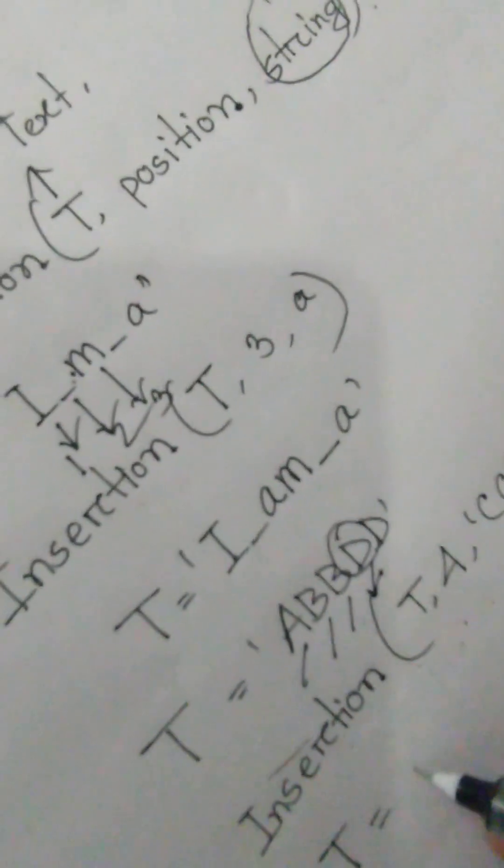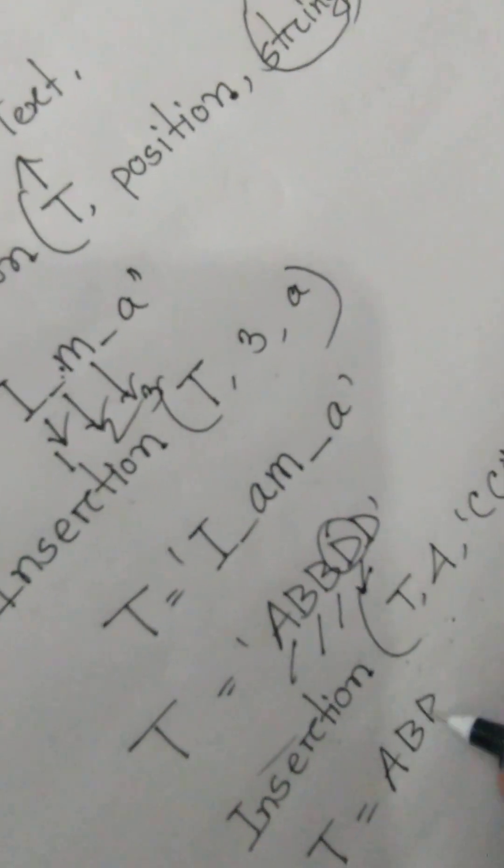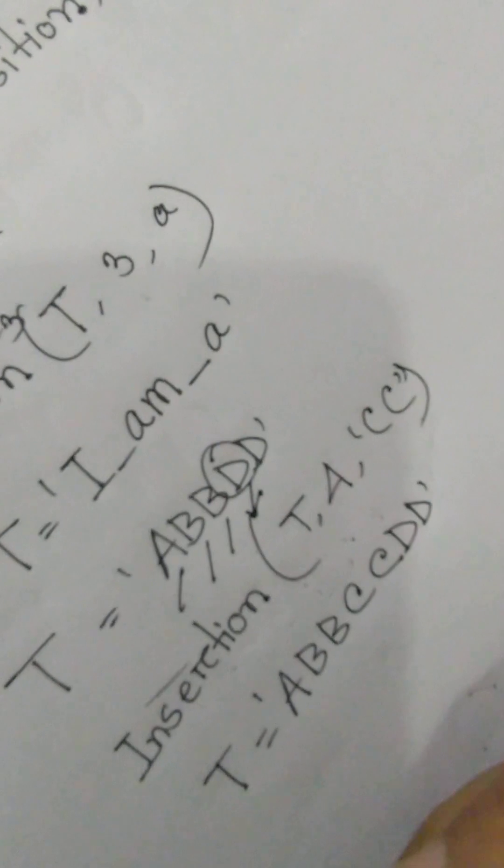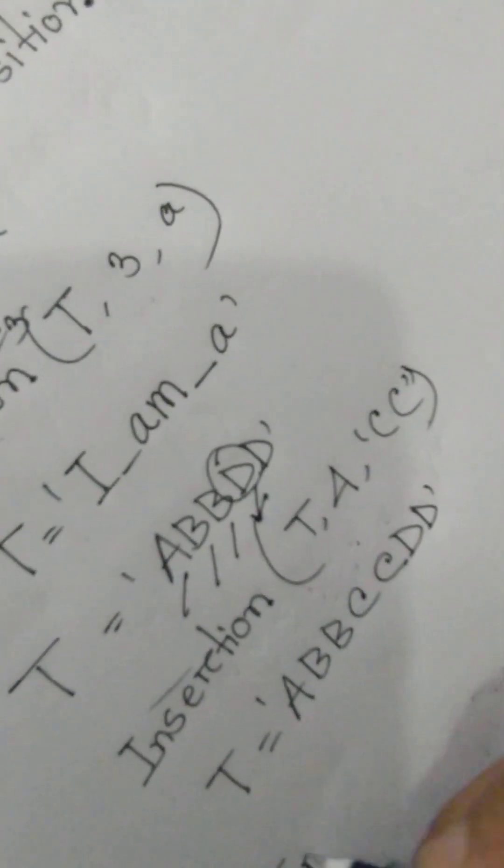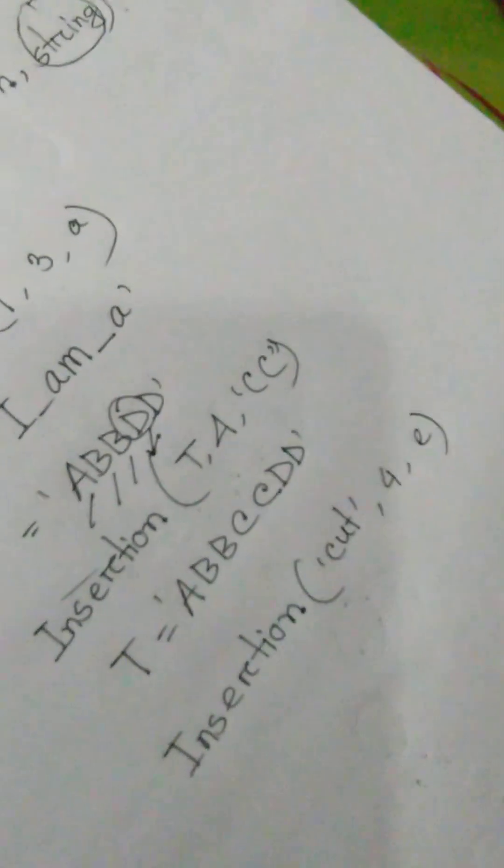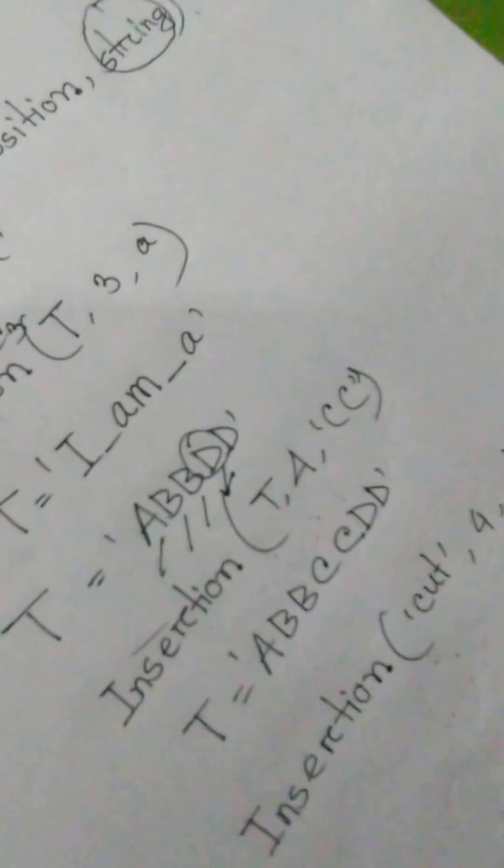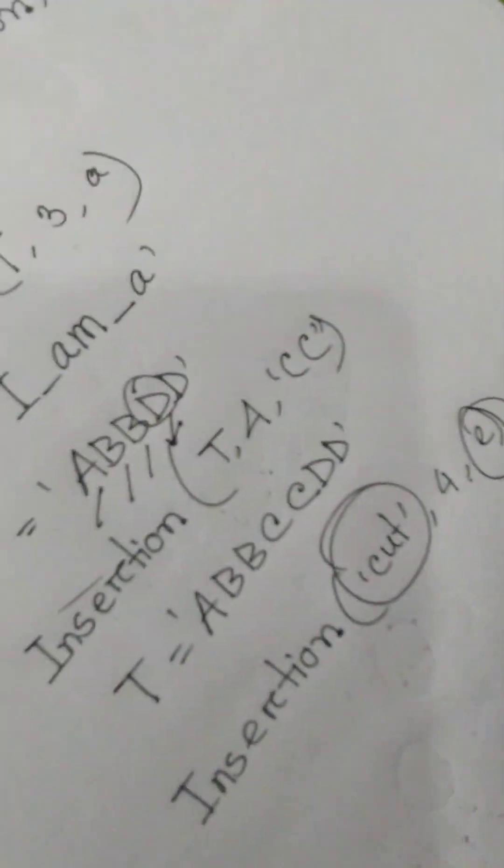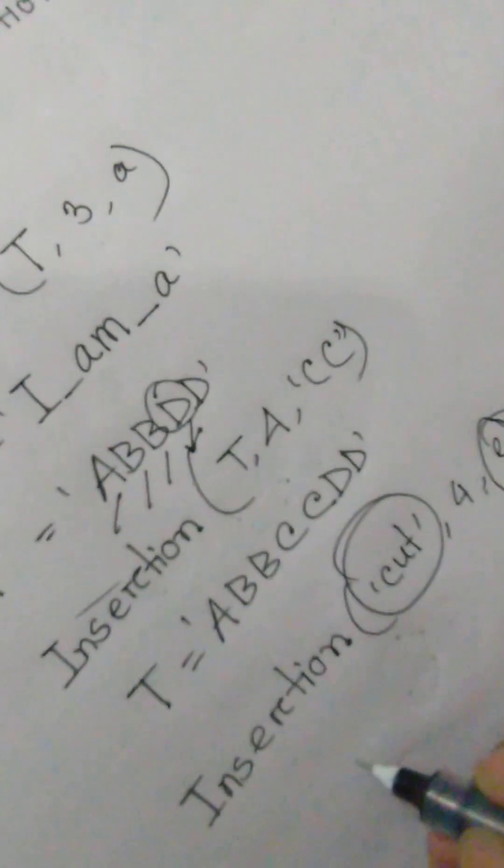Another is insertion C U T, 4, E. That is, we have mentioned the string and we want to add E on the fourth position. That is C U T, one, two, three, and the fourth position is blank.